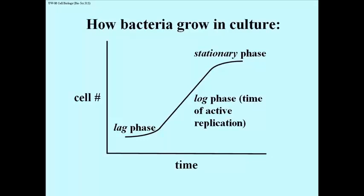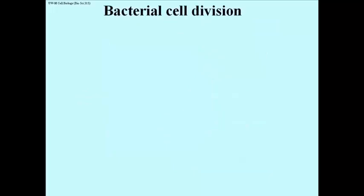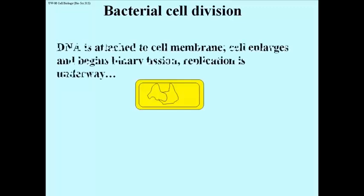When a culture becomes filled with bacterial cells, there is apparently a signal that tells them their density is high enough, and the cells will stop dividing rapidly and go into the stationary phase. So let's take a look at bacterial cell division and specifically when in the life of a cell does DNA get synthesized.